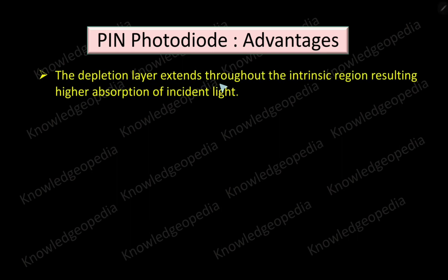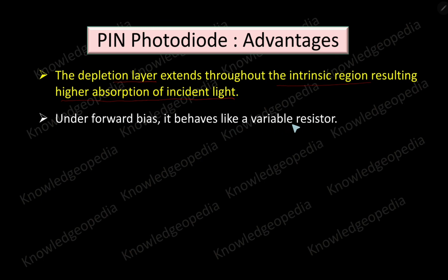Now let us discuss some advantages of PIN photodiodes — you may also write these as characteristics. The depletion layer extends throughout the intrinsic region, resulting in higher absorption of incident light. This leads to high photocurrent. Under forward bias it behaves like a variable resistor.